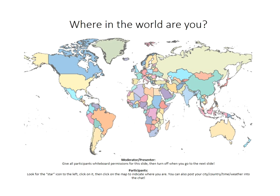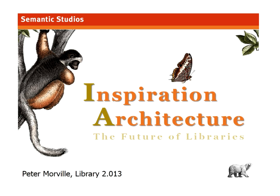This is a chance for those of you who are in the room participating live to indicate where you're participating from. Look to the left of the map for the star icon — click on it twice and then click on the map. It's fun if you put a note in the chat as well. Let us know state, country, time, temperature, anything you think we might find interesting. It's really fun to see international participants. But in order to give as much time to our keynote speaker, I'm going to turn the time over to him.